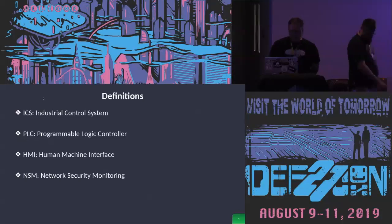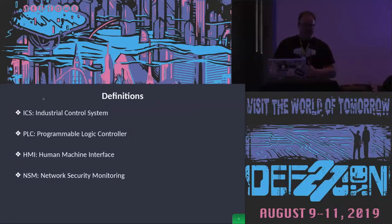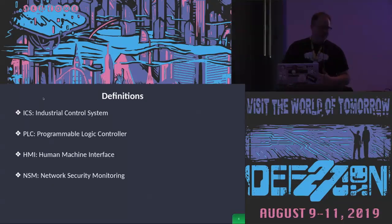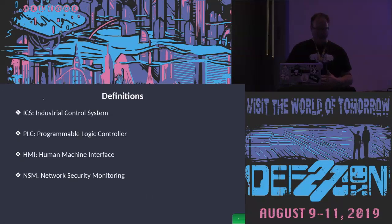We're going to talk about some fundamental definitions in case anybody doesn't know. I'm just going to refer to them by their acronym names. ICS stands for Industrial Control System. PLC is Programmable Logic Controller. HMI for Human Machine Interface. And NSM stands for Network Security Monitoring.